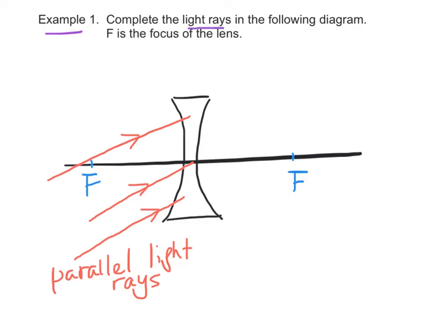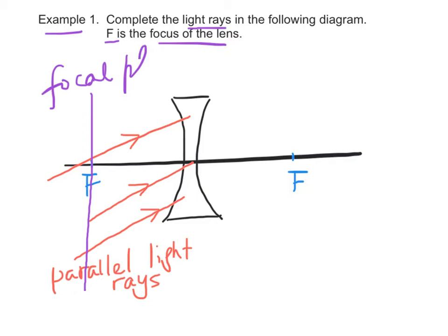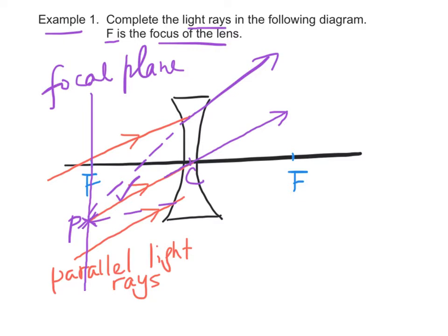Example 1: Complete the light rays in the following diagram, where f is the focus of the lens. First, let's draw the focal plane. Then we complete the light ray passing through the center of the lens, which travels along a straight line. Produce this light ray backward to meet the focal plane at point P. Other light rays parallel to this light ray will be refracted and, after producing backward, will pass through the same point P. Therefore, we can draw the refracted light rays easily.